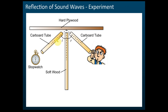We have these cardboard tubes to direct the sound, so that the sound produced can pass through the cardboard and hit the reflector. We have another cardboard here with the observer positioned here. We adjust these two cardboards until the observer can hear the loudest clicking sound from the stopwatch.